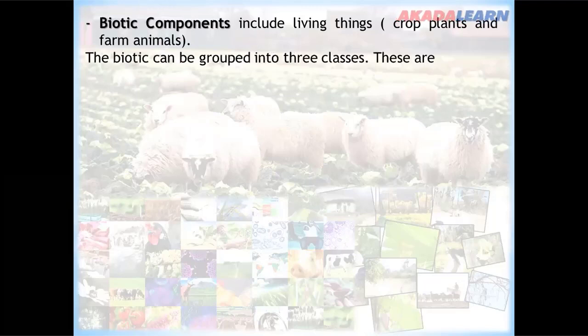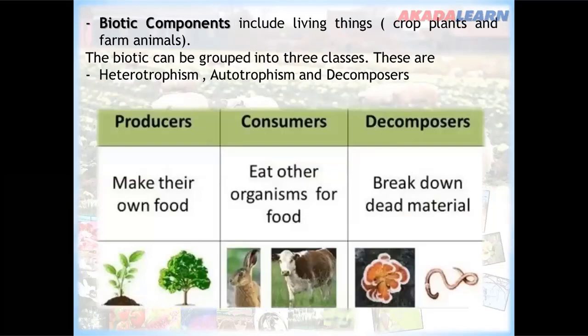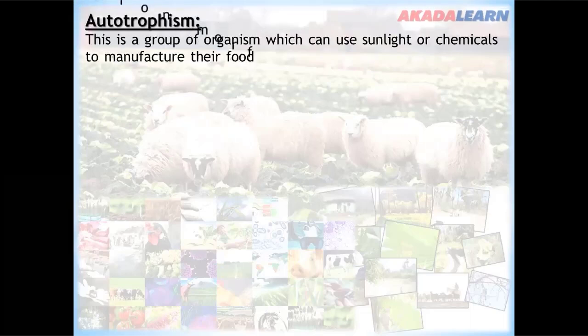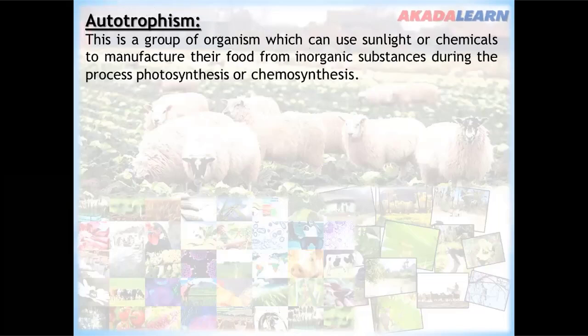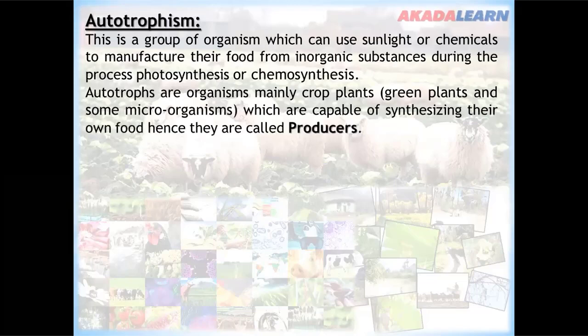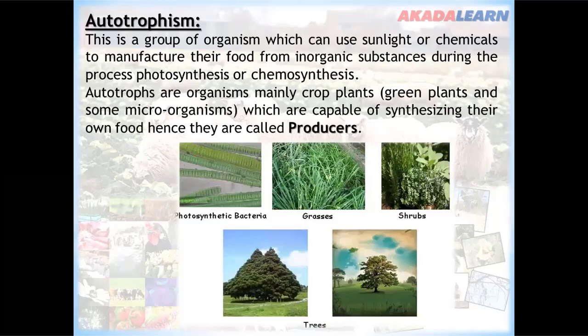The biotic components can be grouped into three classes: autotrophs, heterotrophs, and decomposers. Autotrophs are organisms which can use sunlight or chemicals to manufacture their food from inorganic substances during the process of photosynthesis or chemosynthesis. Autotrophs are mainly crops, green plants, and some microorganisms capable of synthesizing their own food — hence they are called producers.